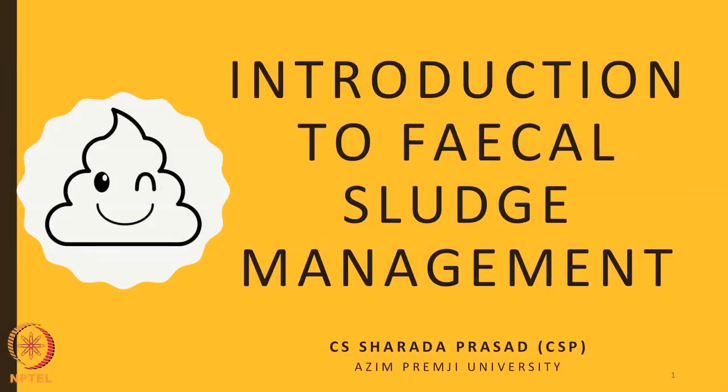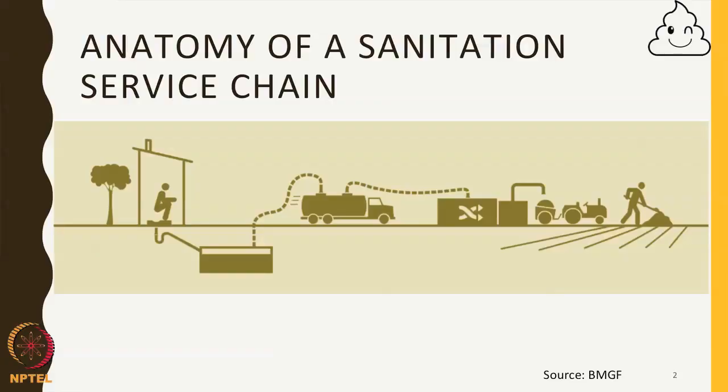Let us get started. How many of you already know this sanitation service chain? This is called the sanitation service chain, and in few cases it is also called the sanitation value chain. What is happening there is called interface or capture, this tank is called containment, this is emptying and transportation, this is treatment, and this is reuse.